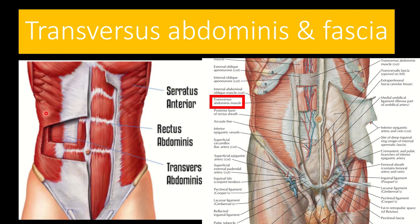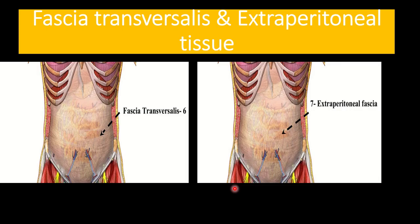We can see another muscle — the transversus abdominis muscle and its fascia. In the cut section, the most superficial is the external oblique muscle; below it is the internal oblique muscle; and finally, the deepest is the transversus abdominis muscle. Its fibers run completely transverse — that is why it is called the transversus abdominis muscle. When it goes close to the midline it also converts into a fibrous structure forming the transversus abdominis fascia. These three muscles are very important for the anterior abdominal wall.